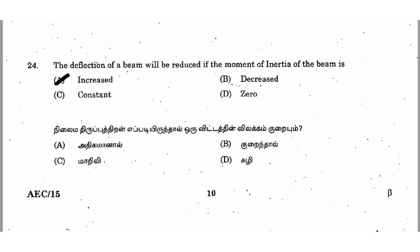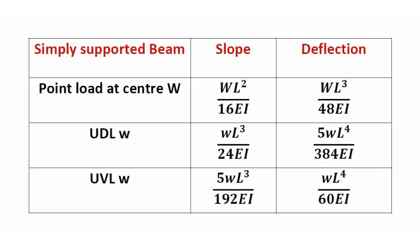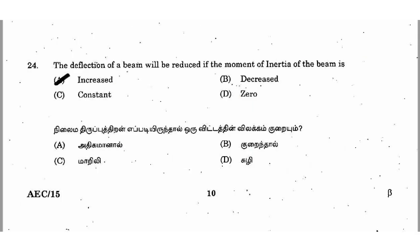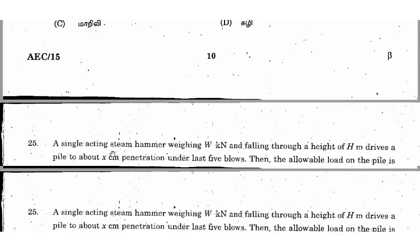If the moment of inertia increases, the deflection reduces. Deflection is also inversely proportional to the modulus of elasticity E. So if modulus of elasticity increases, deflection reduces; if modulus of elasticity decreases, deflection increases. The right answer is option A: the deflection of the beam will be reduced if the moment of inertia of the beam is increased.